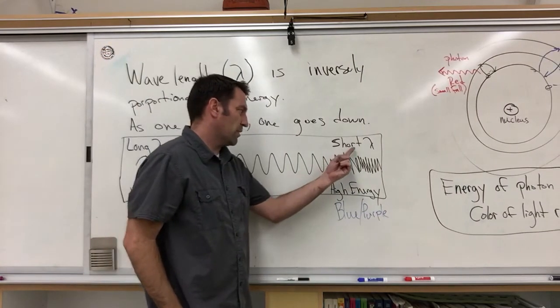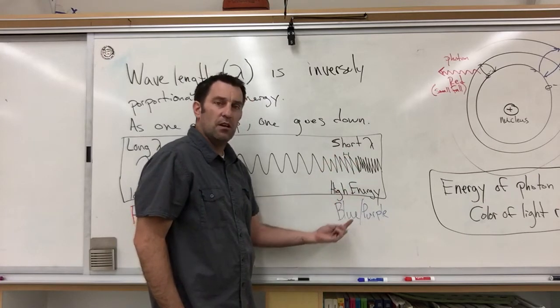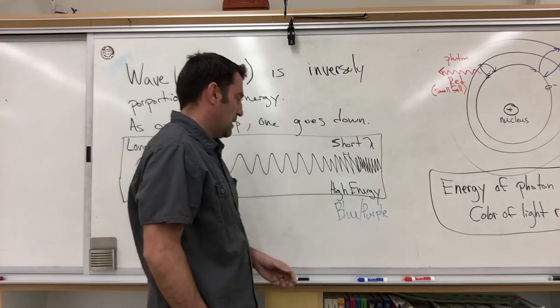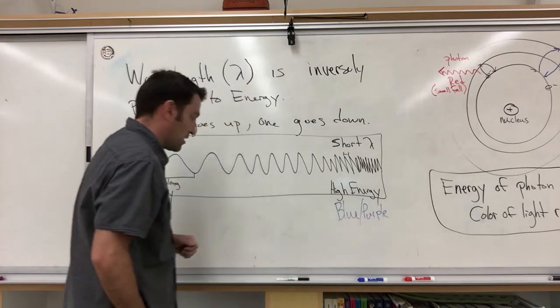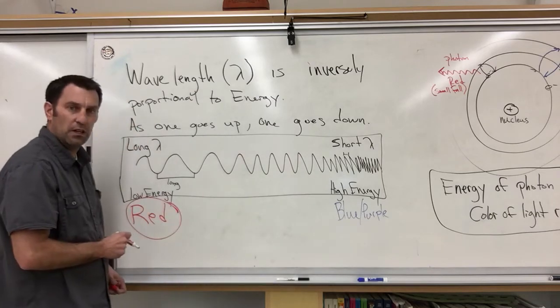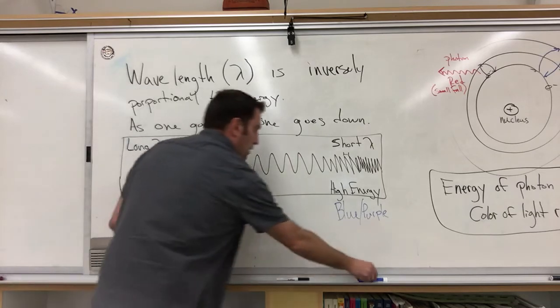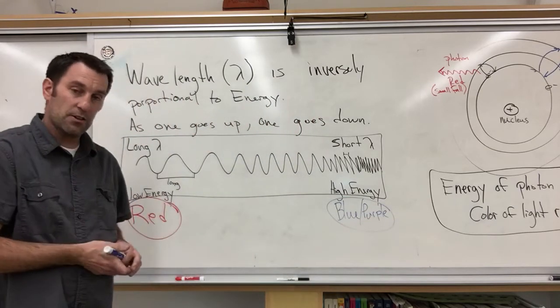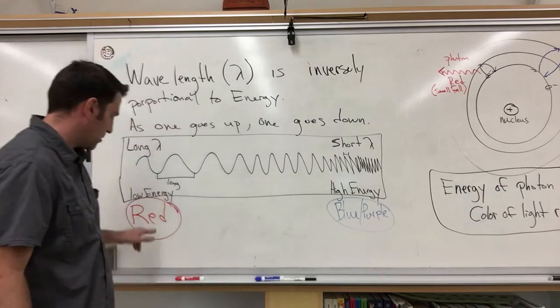So short wavelength is very high in energy. And that would be blue or purple. I don't really have a purple marker. And this is the analogy I always used. Bear River is weak, and Box Elder is strong or high in energy. Nothing against the bears, it just works for the color.